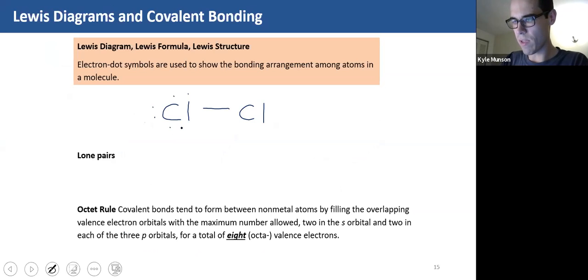One, two, three, four, five, six. One, two, three, four, five, six. So this is the bonding arrangements here and lone pairs, right? Are going to be these electrons here. That aren't participating in bonding. They're just kind of hanging out.